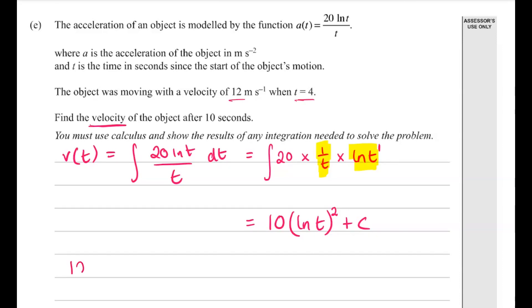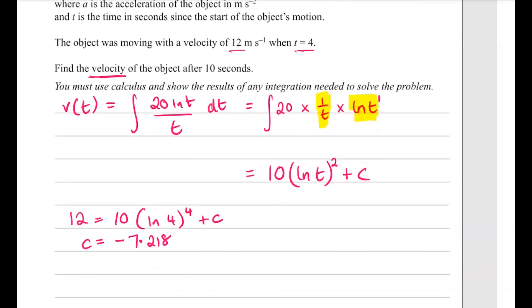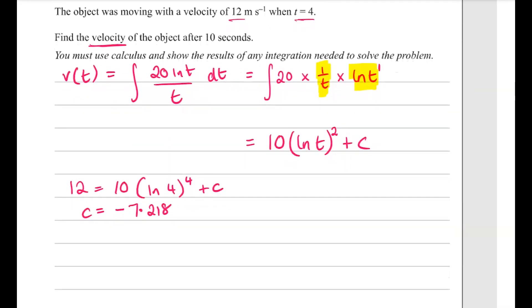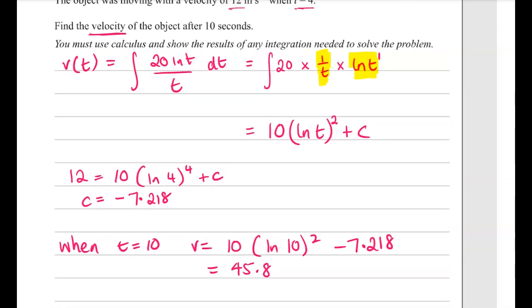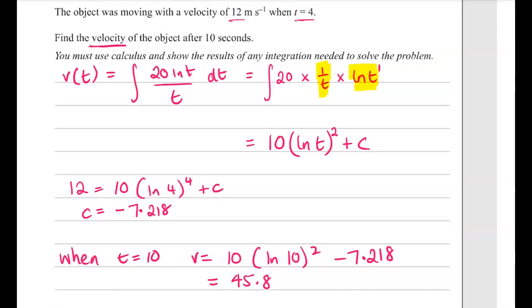So we've got 12 equals 10 natural log of 4 squared plus c. We're not going to be able to keep that tidy, it's going to end up being a decimal, so c is equal to minus 7.218. Then find the velocity after 10 seconds, so when t equals 10, v equals 45.8 by putting it back into that formula, and the last thing is just to put the units on it, so velocity, that's speed, we're measuring that speed in meters per second.